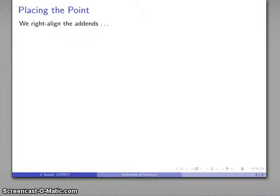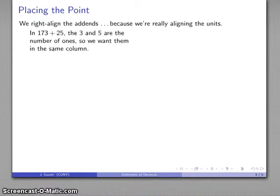Now the question to ask then is, why do we do the right alignment of the addends? The reason we do that is we're really aligning the units. This would be clear if we used a place value chart, but otherwise we note that in our addition, 173 plus 25, the 3 and the 5 both indicate the number of ones, so for convenience we want to actually place them in the same column. So there's our 173 and our 25, the 5 should go in the same column as the 3, and the 2 is the number of tens, and so when I add them together, I'm going to do my addition correctly.